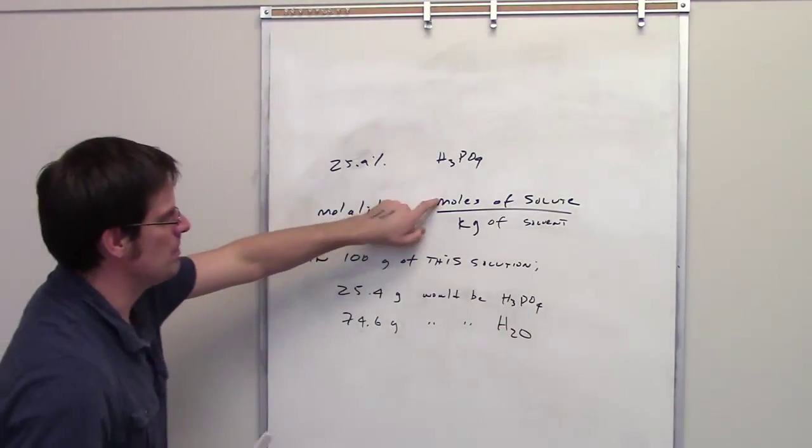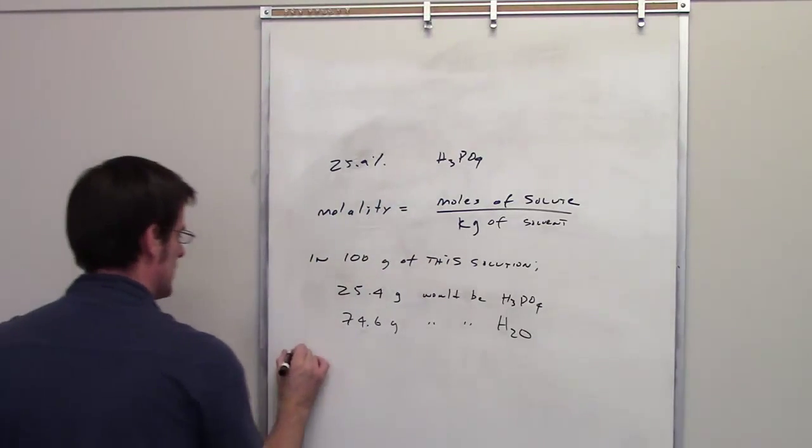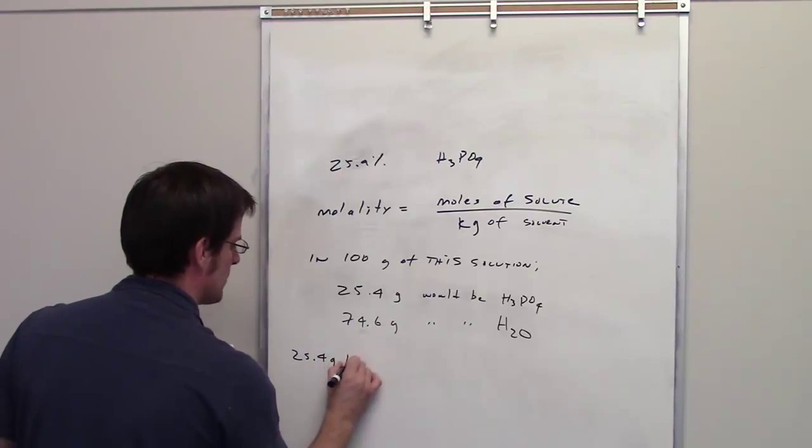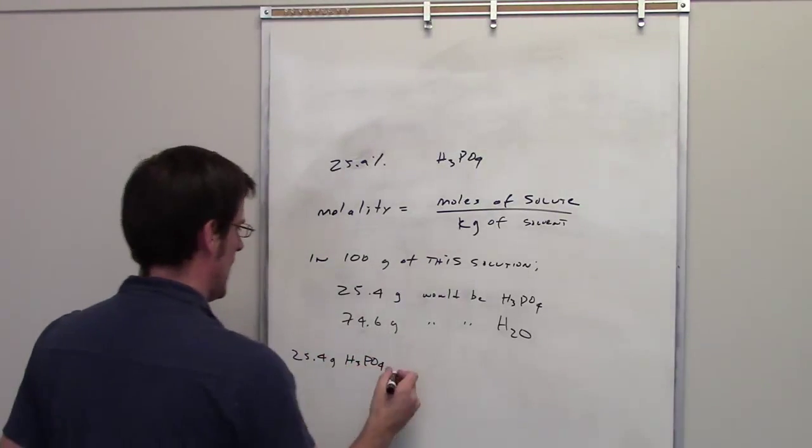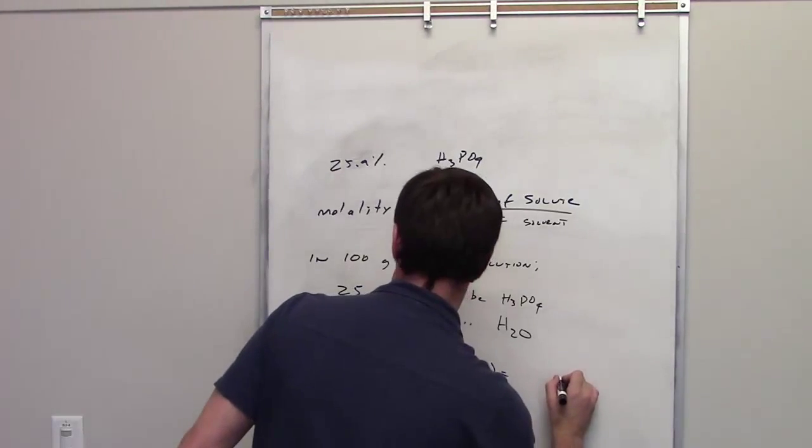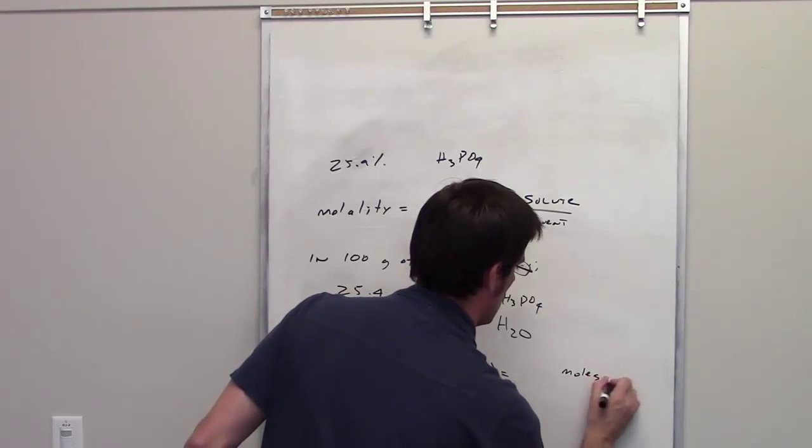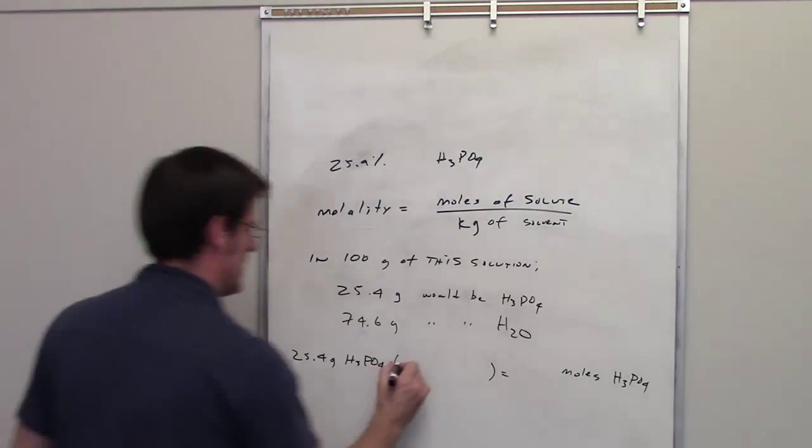Okay, so once again we're trying to determine the moles of solute divided by kilograms of solvent. So, if I've got 25.4 grams of phosphoric acid in order to determine the molality, I need to determine how many moles of phosphoric acid that is, moles of H3PO4. Do you guys know how to do that? You should. From last semester.